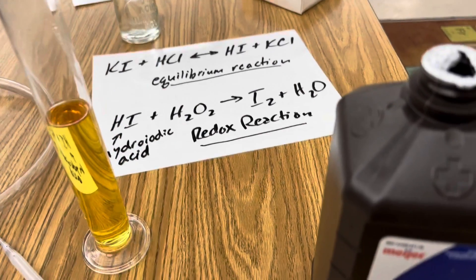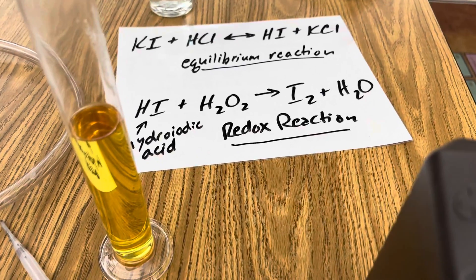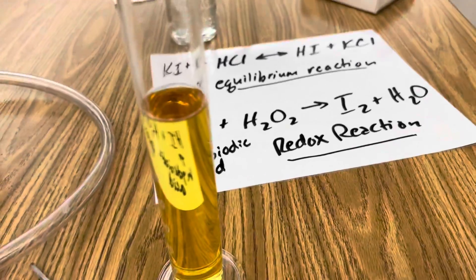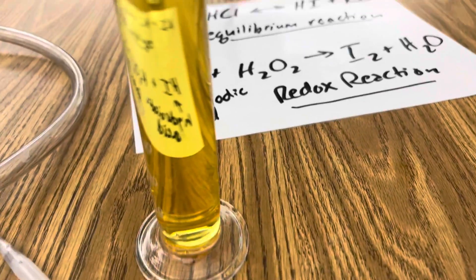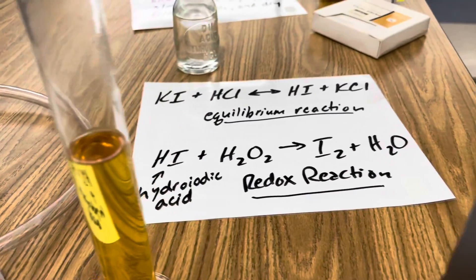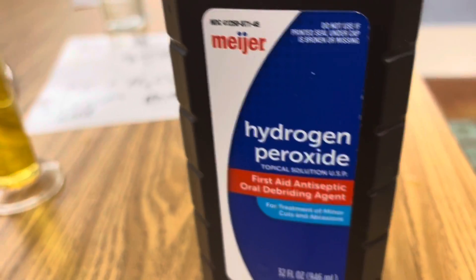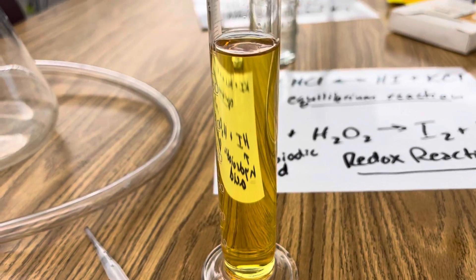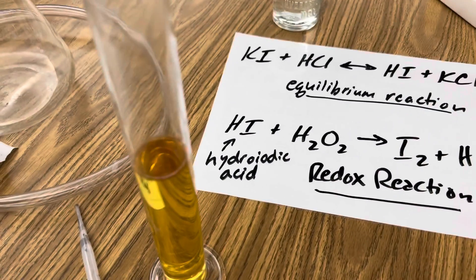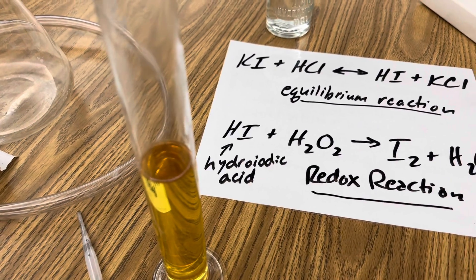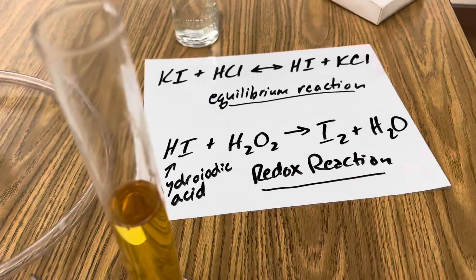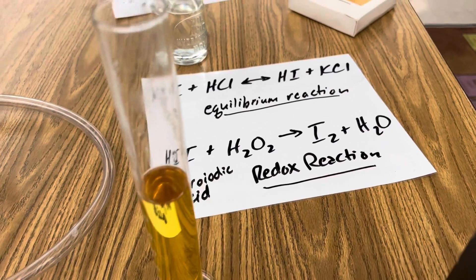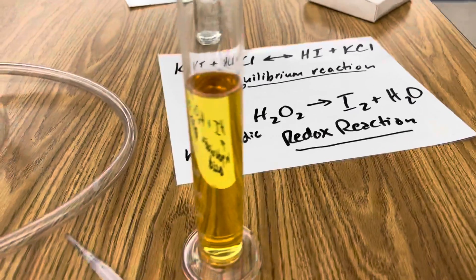This is the second part of our extraction. I transferred the solution to this graduated cylinder so you can really see the precipitate of iodine. All I'm going to do is add 3% hydrogen peroxide to our graduated cylinder and you'll actually see iodine precipitate out of the solution. This is where the hydroiodic acid is oxidized by the hydrogen peroxide, which just leaves iodine and water in our graduated cylinder.